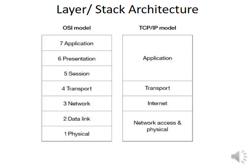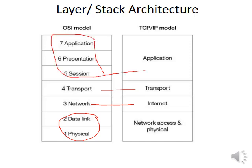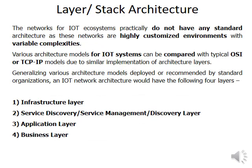On the left side you can see the OSI model, and on the right side the TCP/IP model. In the TCP/IP model, the physical and data link layers are combined and named 'network access,' and the network layer is called the 'internet layer.' Session, presentation, and application layers from OSI are combined in TCP/IP as just the 'application layer.' But in IoT, there is a different layer structure.